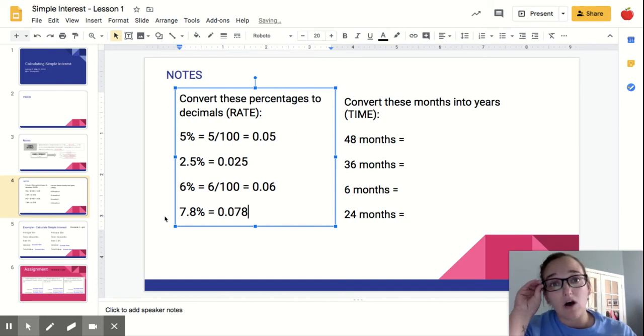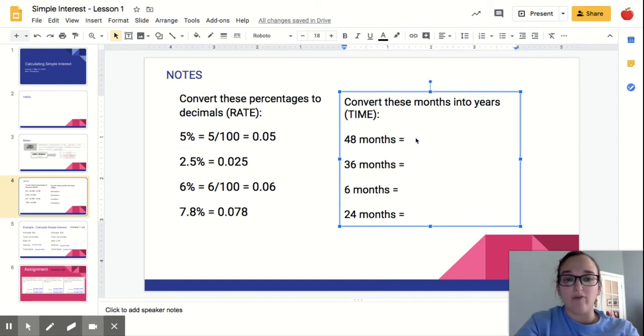So when I'm solving interest problems, they'll give you a percentage. You have to turn it into a decimal. And then they'll also give you a time. And sometimes they write it in months. But for our formula, we need it to be in years. So just a refresher. If I know the months, I can divide by 12. I know you guys know that stuff.